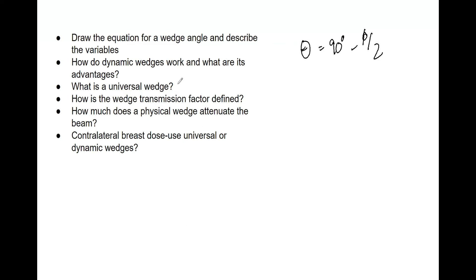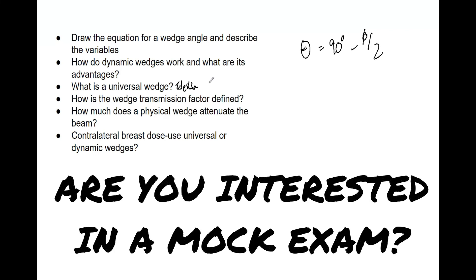A universal wedge is typically used by Elekta — it's the only machine that uses this. They use a single wedge of 60 degrees inside the gantry head, used in conjunction with open fields to make the desired wedge angle by changing the ratio of open to wedge monitor units. If you need a wedge of 75 degrees, more MUs are given in the wedge, so part of the beam is delivered with the 60-degree wedge in and some without, replicating a wedged field.